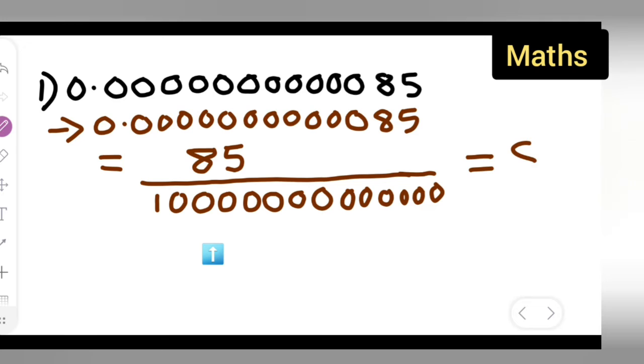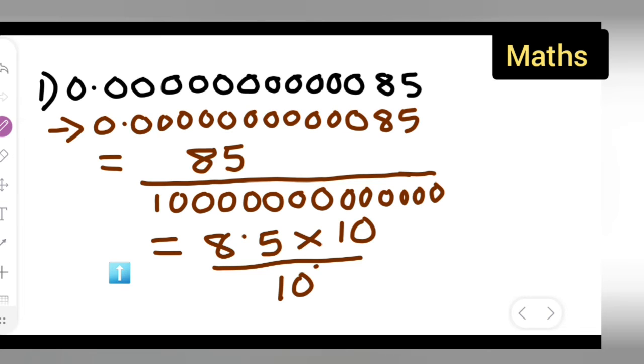Now you'll have to write down 85 upon 10 raised to power of, or else one more easy part is there. So write down 8.5. If I want to write this with decimal point you'll have to multiply this with 10, upon 10 raised to power of 13. So this is 10 raised to power of 13.